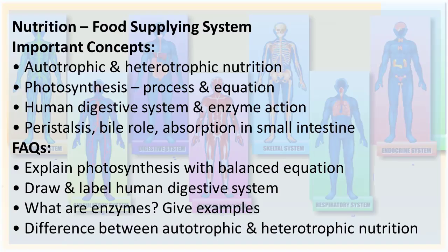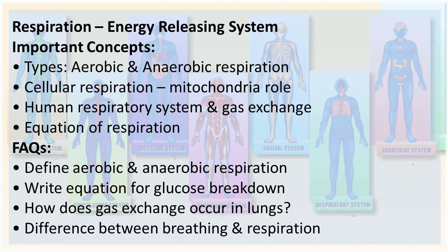Important concepts also include peristalsis, bile role, and absorption in the small intestine. Frequently asked questions are: explain photosynthesis with a balanced equation, draw and label the human digestive system, what are enzymes and give examples, and the difference between autotrophic and heterotrophic nutrition.